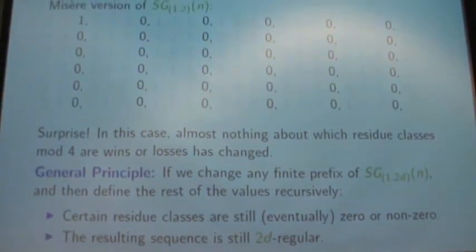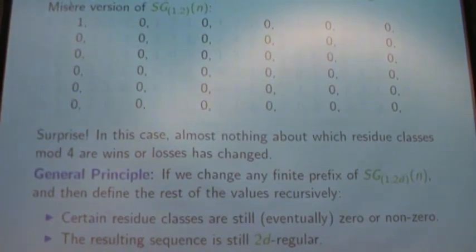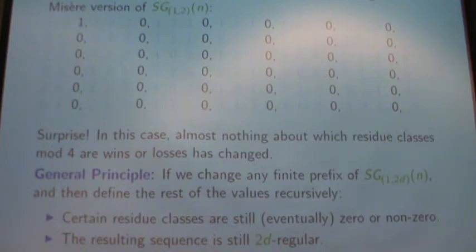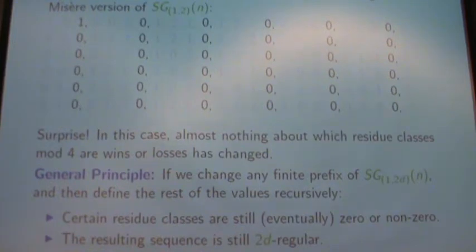After we change the first 10,000 values and keep everything else defined recursively, depending on those earlier values that we've changed, as long as we're looking for large enough values of n, the two things we are following throughout this talk — certain residue classes being zero, certain residue classes being non-zero — that's still going to hold. And if we were 2D regular before we started, we're still going to be 2D regular. So these properties are fairly robust. We can mess with them at the beginning and they're still going to reassert themselves.